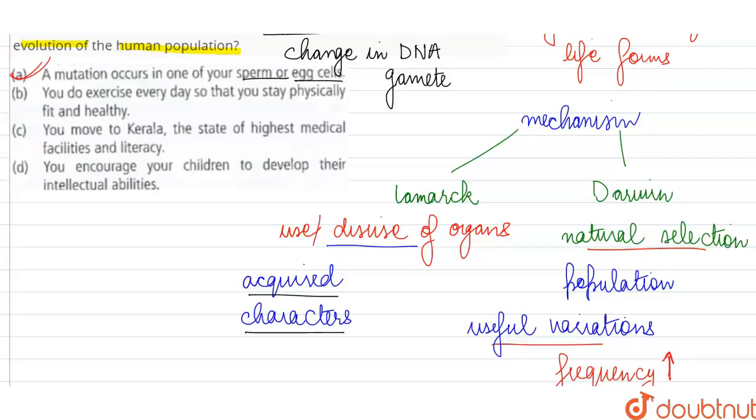Otherwise, if we do exercise every day, if we stay physically fit and healthy, this characteristic will be an acquired character - it will not be passed on to the progeny. If we work out a lot, if we build a very muscular body, then our offspring are not going to be born muscular because this is a trait that we have acquired during our lifetime. Similarly, if one moves to Kerala, a state having a high literacy rate and good medical facilities, still it's not going to affect the evolutionary process because whatever changes are going to come in our lifestyle or quality of life, they are going to be acquired characters which cannot be passed on to the progeny. So they have no effect on evolution - they only have effect on our individual life.